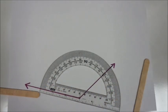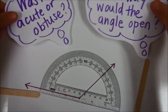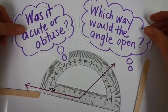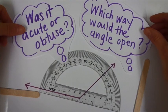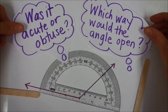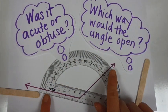So two ways that you can think about which of the numbers to use is to think about does it make more sense acute or obtuse, or can we look at which way the angle might have opened in order to get us to this point.